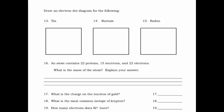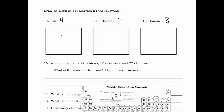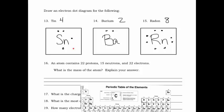Now we're going to draw Lewis dot diagrams for all of these elements. Having your periodic table is essential. Tin (Sn) has a valence number of four. Barium is element 56 with a valence number of two. Radon is element 86 with a valence number of eight. For tin: one, two, three, four dots. For barium: one, two. For radon: one, two, three, four, five, six, seven, eight. Make sure you fill those in the right order or you'll get the last one incorrect.